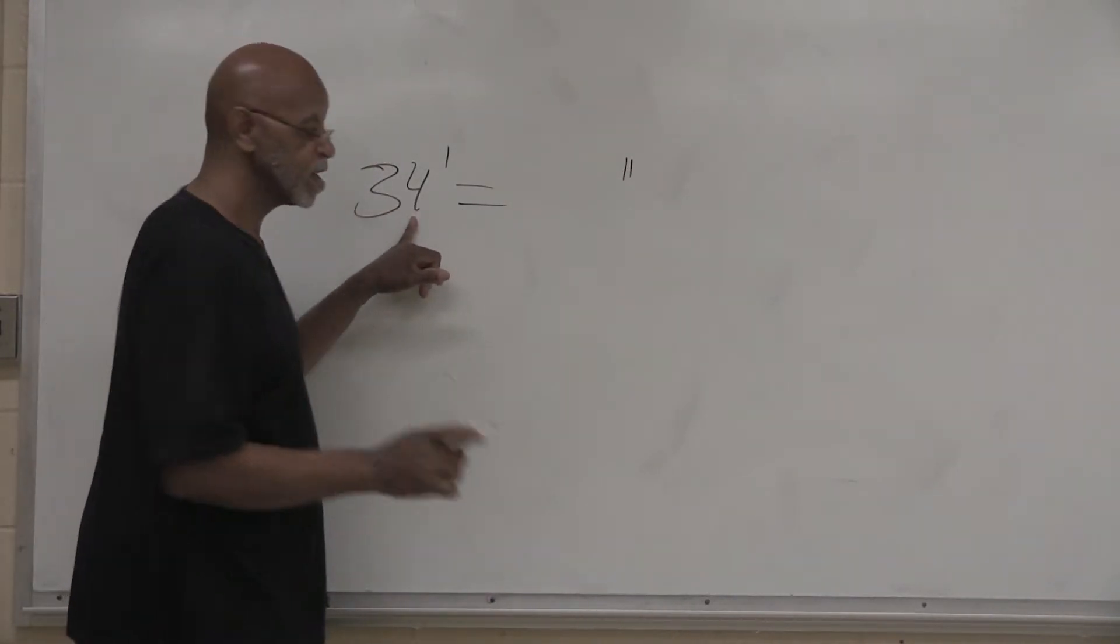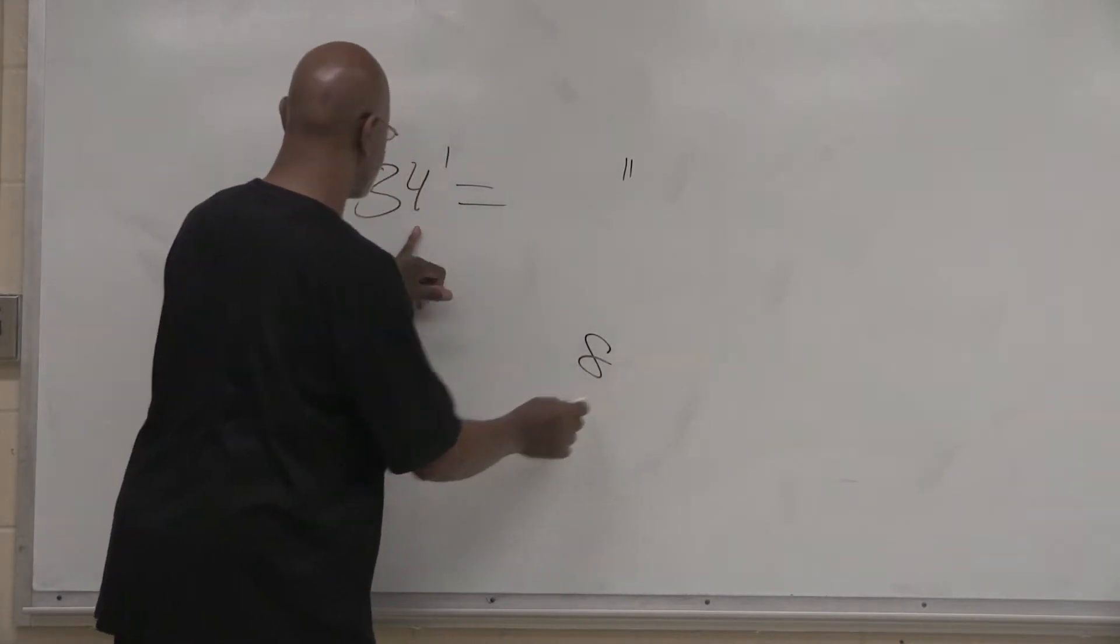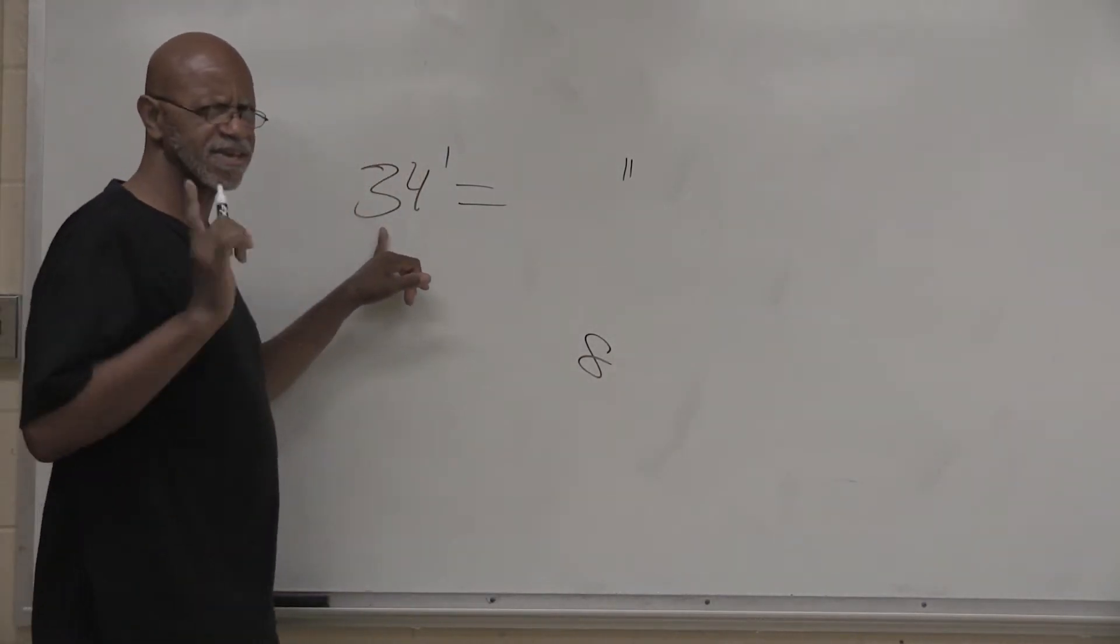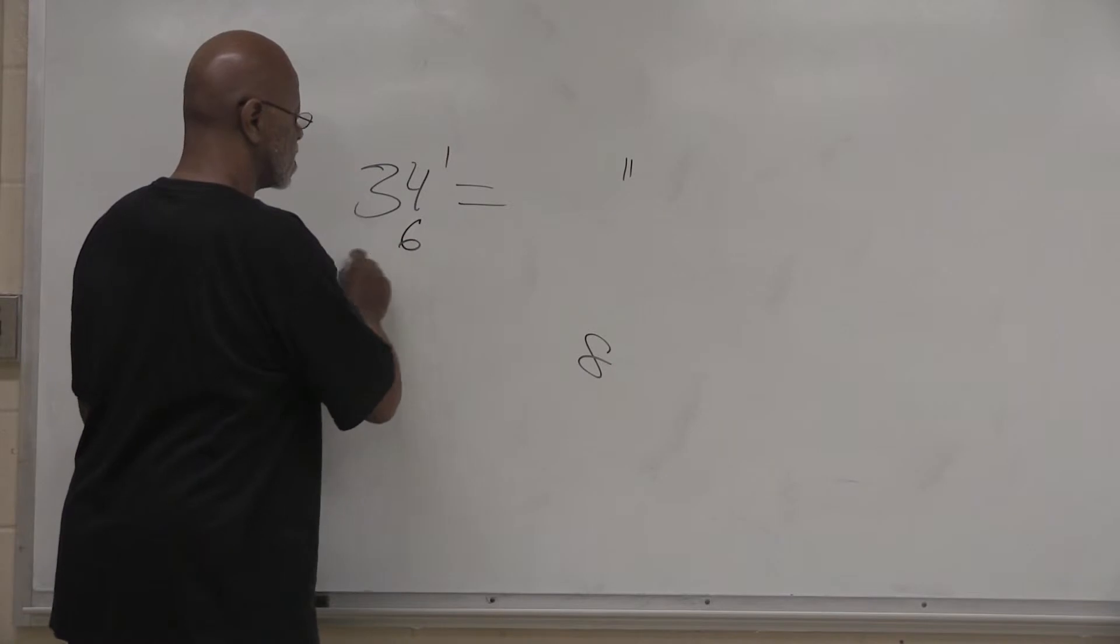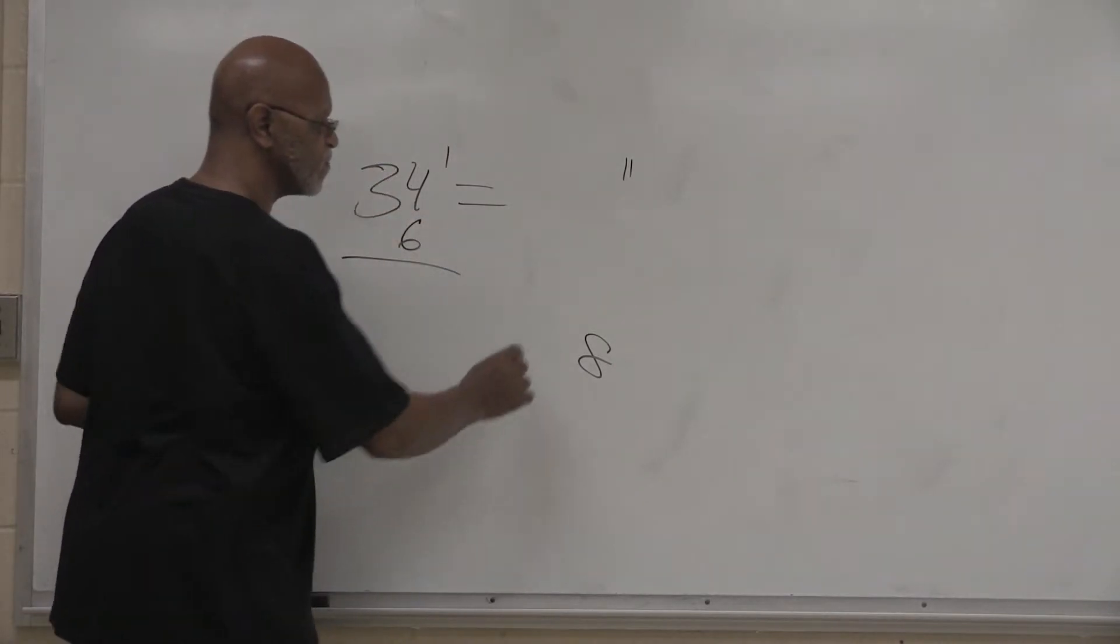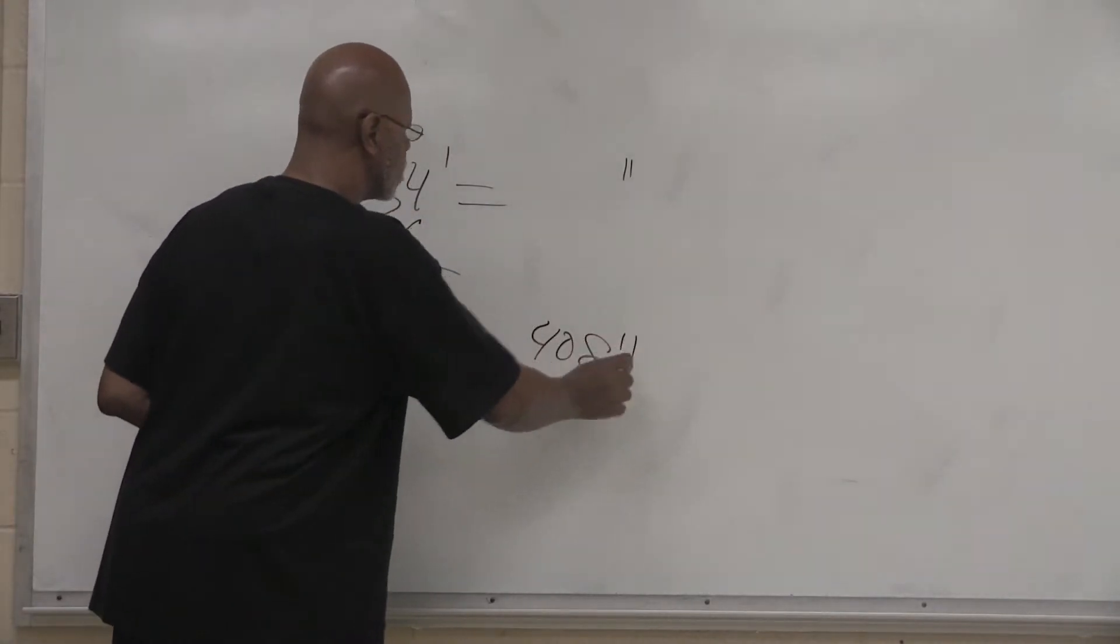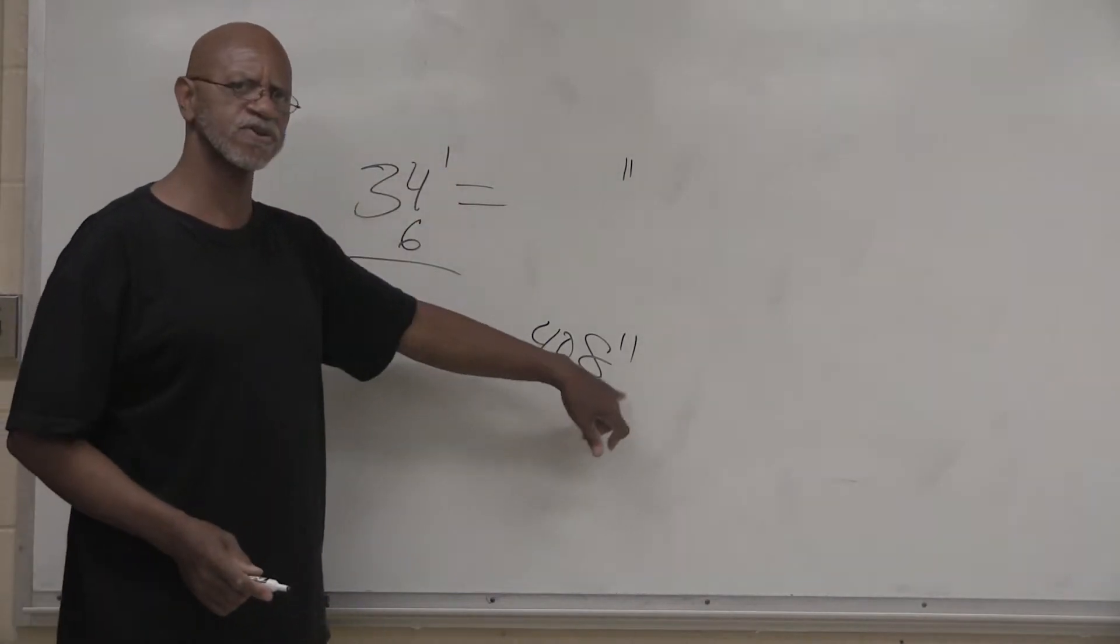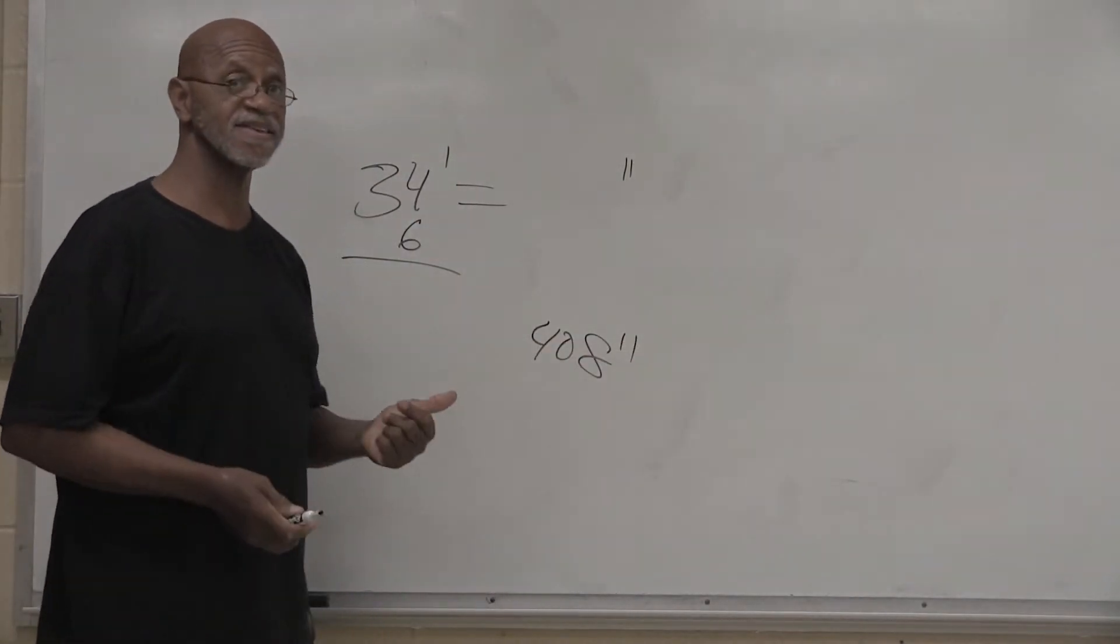4 plus 4 is 8. And 3 plus 3 equals 6. And 6 plus 34 equals 40. So 34 feet equals 408 inches. That easy. On a job, it saves a lot of time, making the worker more productive.